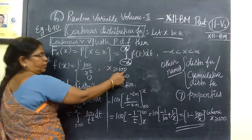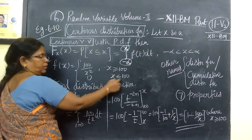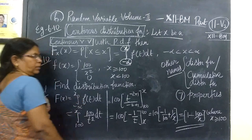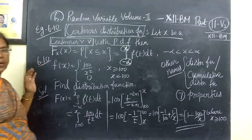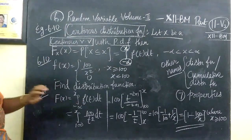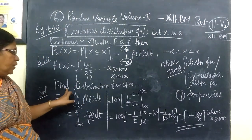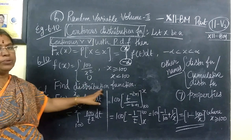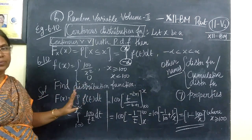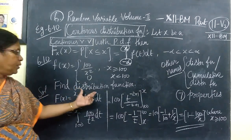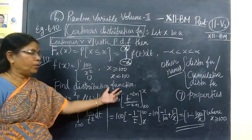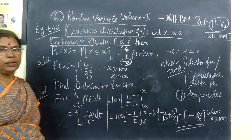The x value is greater than or equal to 0. x is less than 0, giving 0. So, we are finding the distribution function. Simply, the distribution function is up to date.